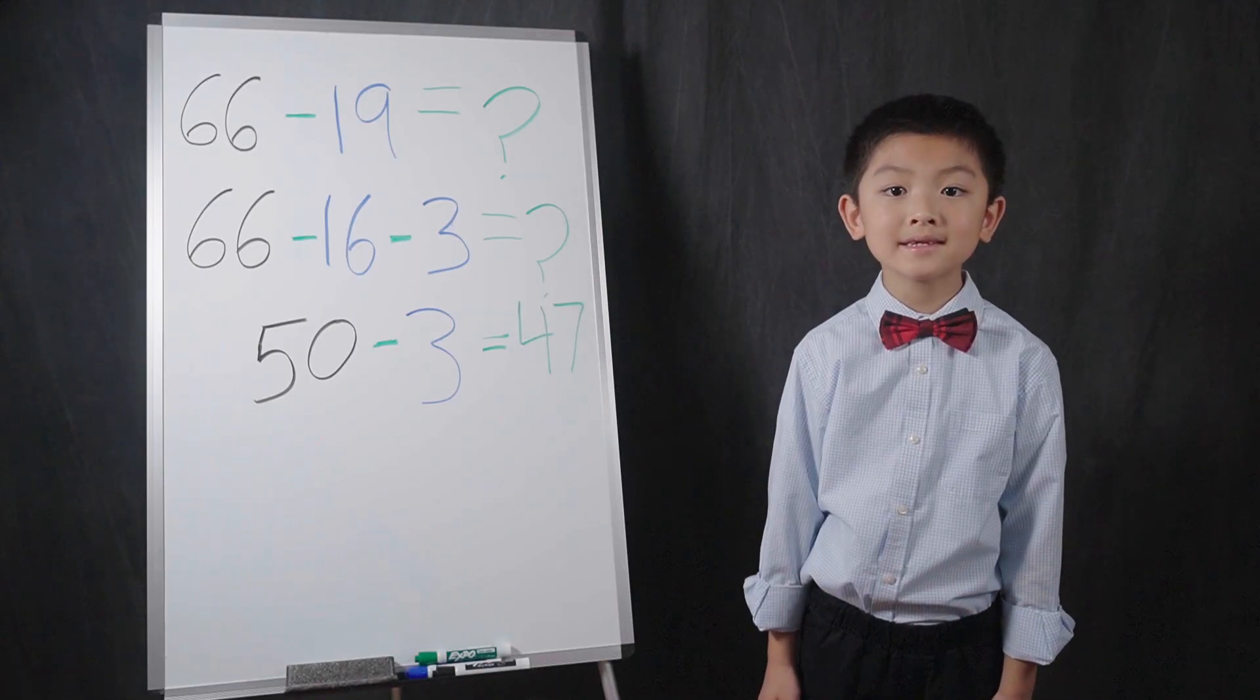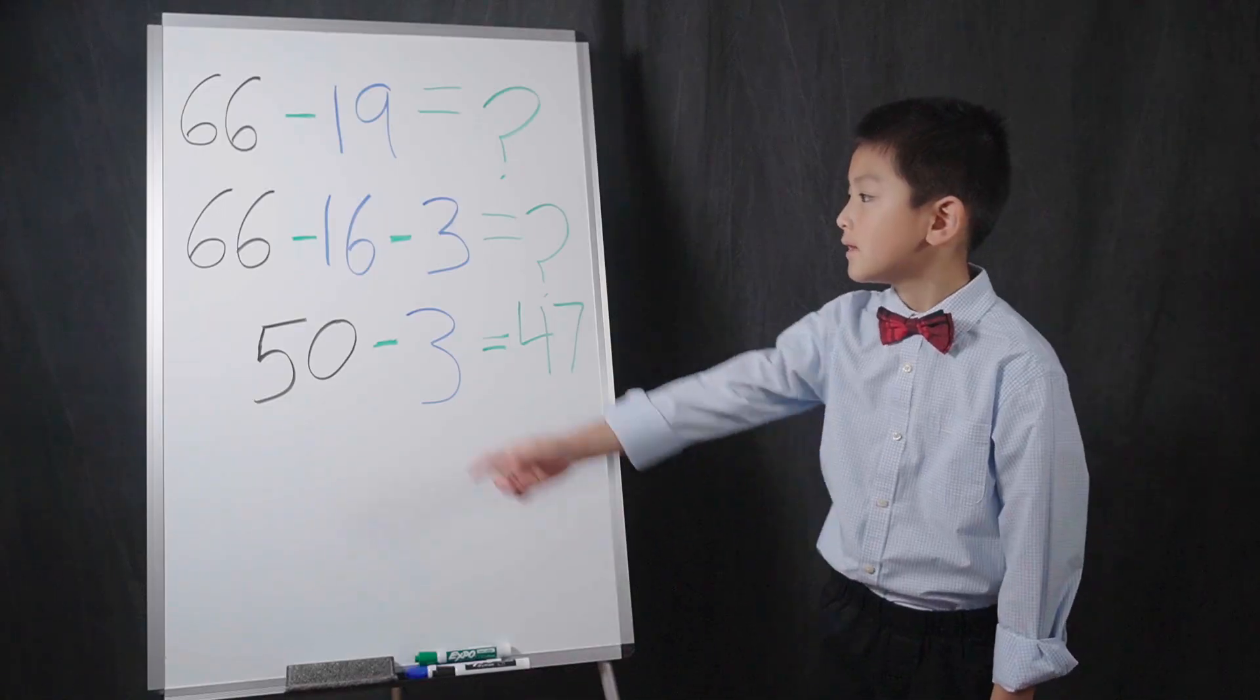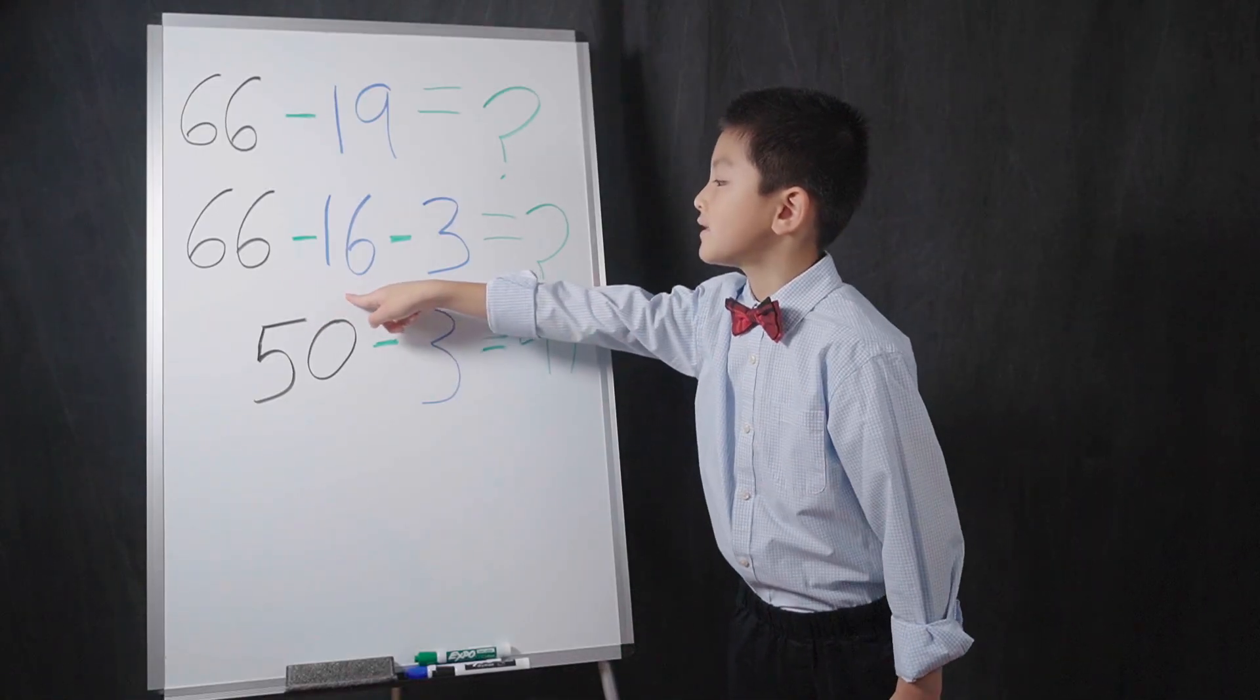This becomes 66 minus 16 minus 3. 66 minus 16 equals 50.